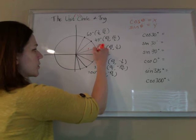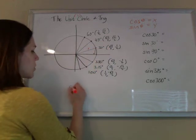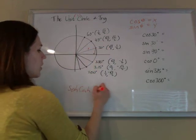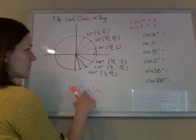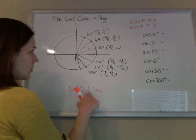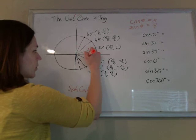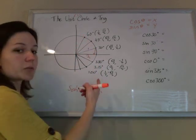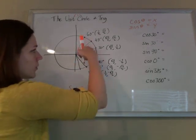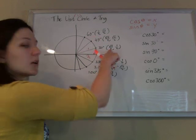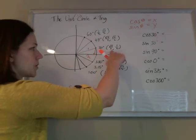It makes sense if you draw a triangle and recognize your SOH CAH TOA. The cosine is the adjacent over the hypotenuse, where the adjacent leg was √3/2 and the hypotenuse was 1. So √3/2 over 1 is √3/2, which is the x-value on the unit circle.